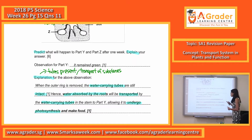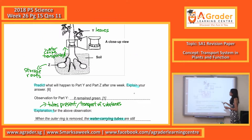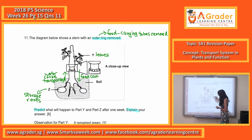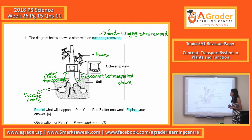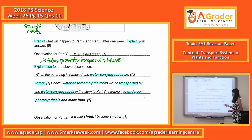What about Part Z? Part Z is actually your storage roots. Food is made by the leaves. When the food-carrying tube is removed, food cannot travel down. So when food cannot be transported down, the roots of this plant will not get any food at all. Since these are storage roots, what happens is these parts will actually become smaller or shrink in size.